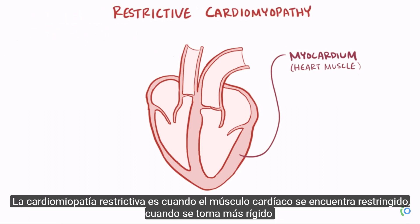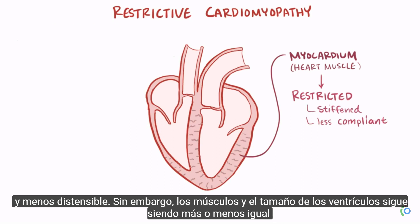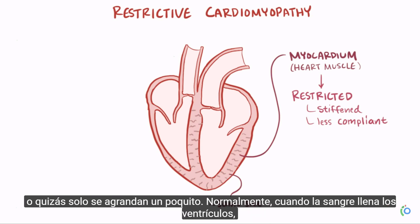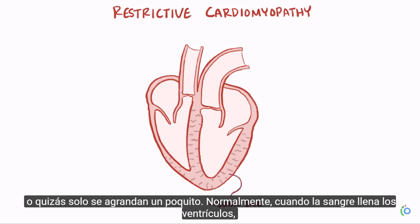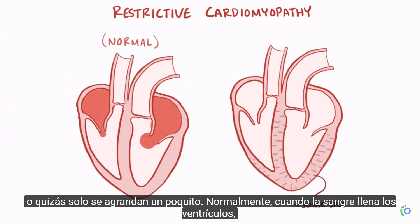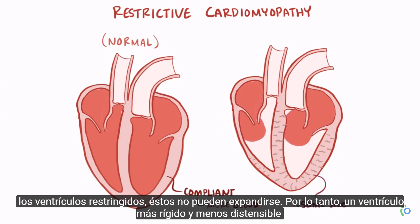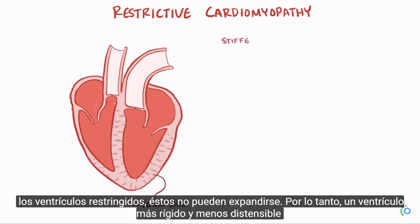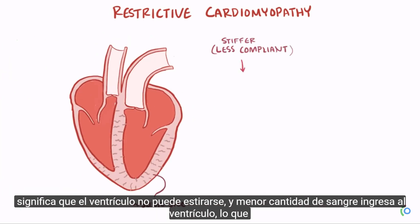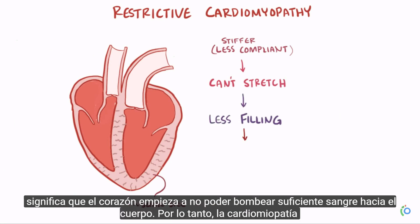Restrictive cardiomyopathy is where the heart muscle is restricted, meaning it becomes stiffer and less compliant. The muscles and size of the ventricles, though, stay about the same, or maybe they only get slightly enlarged. Normally when blood fills into the ventricles, they're compliant, so they stretch out and allow more blood to fill in. When blood fills into restricted ventricles, though, they aren't allowed to expand, so stiffer, less compliant ventricles means that the ventricles can't stretch, and less blood fills into the ventricle, which means the heart starts to fail to pump out enough blood to the body.